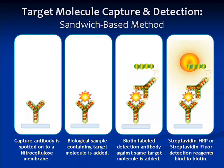This shows how our antibodies are used to detect protein. In Panel 1, an antibody is immobilized on a solid support, such as a nitrocellulose membrane. And then when a biological sample is added — for instance a human serum sample — the antibody will capture the protein it is specific against, as depicted in Panel 2.